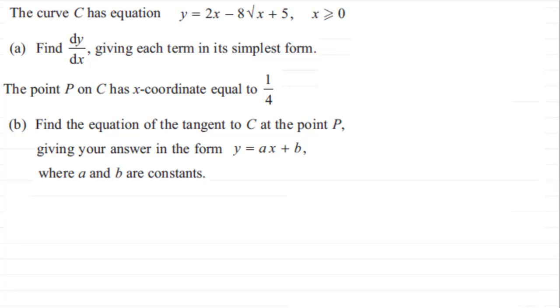So let's start with that first of all. So for part A what I'm going to do is just rewrite this but we need to change the square root of x to a power. And you should be familiar with the fact that the root of x is the same as x to the power half. So we're going to take this as y equals 2x minus 8 and instead of root x is x to the power half and then plus 5.